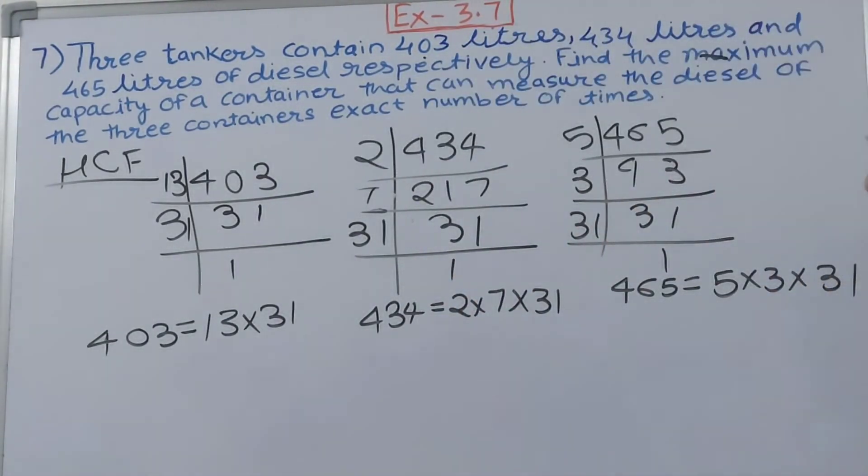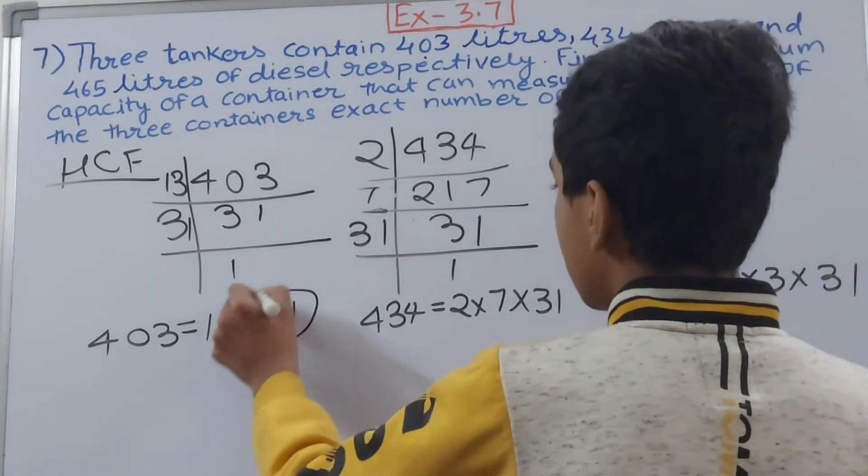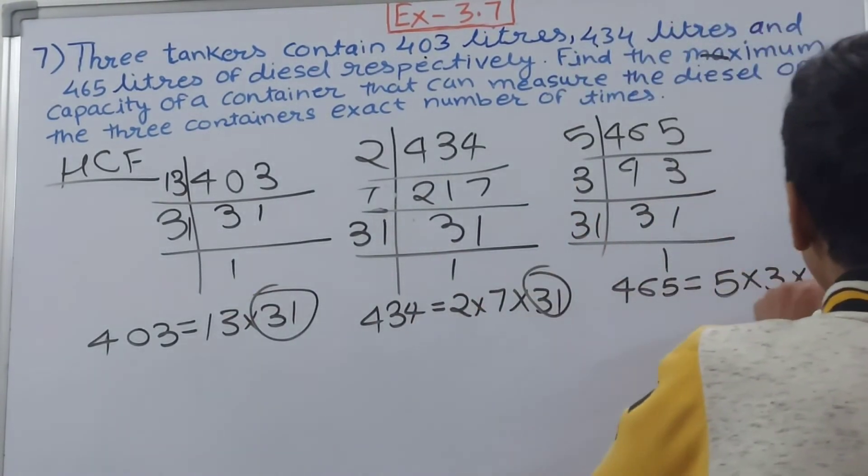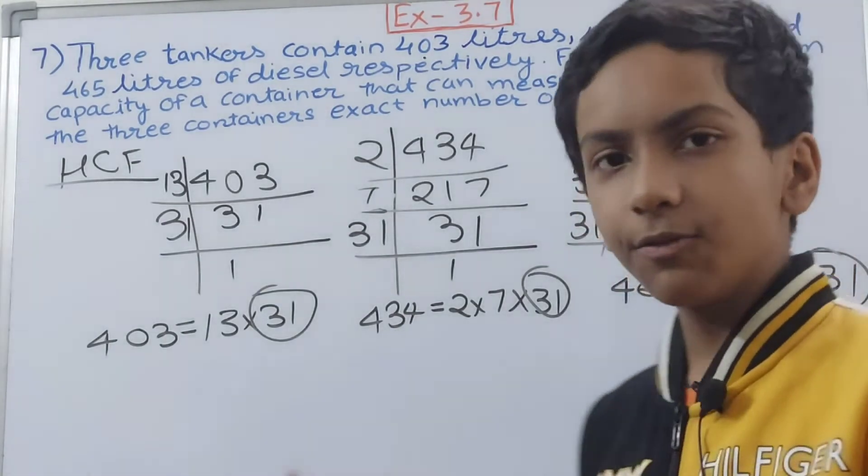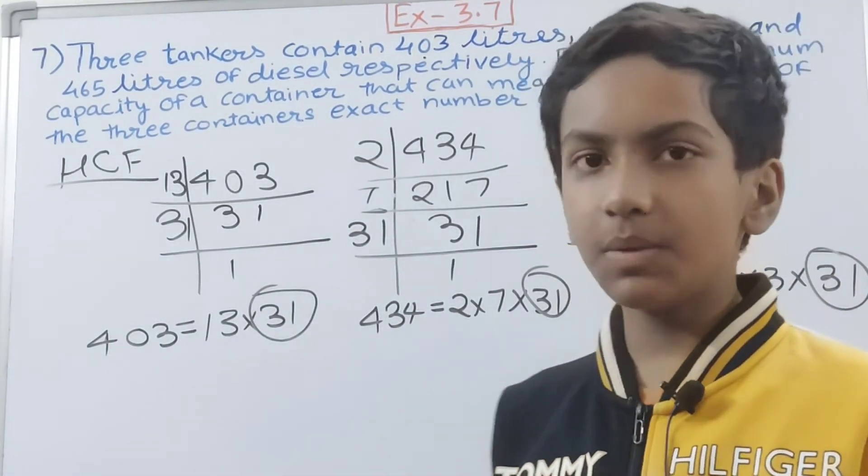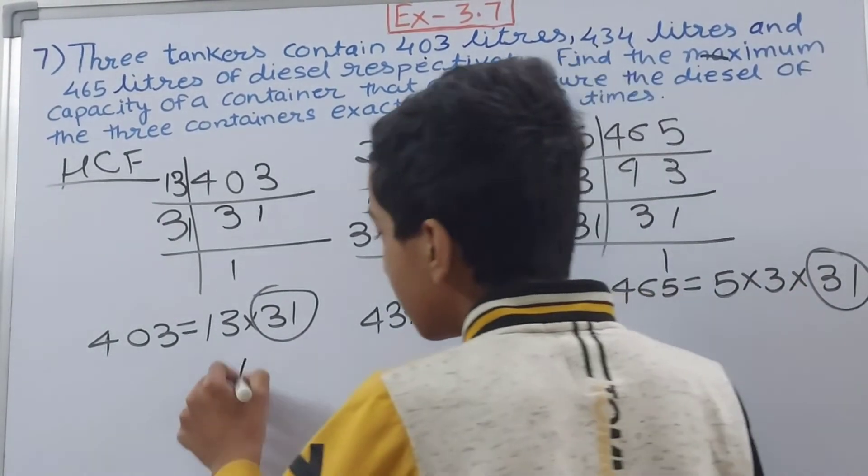Now we will see if any factor is common here. If you see, in each of these we are getting this 31. You are only getting one factor as a common factor, one same number, so that one number will only be the HCF of your numbers.